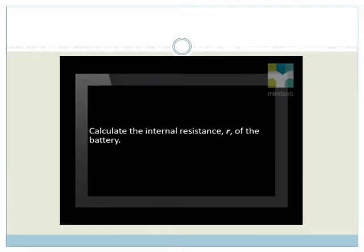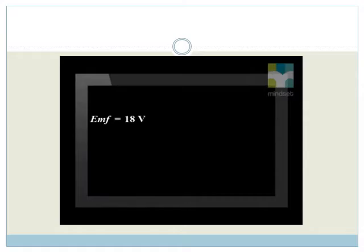Calculate the internal resistance R of the battery. From the question, we see that EMF equals 18 volts, the load external resistance equals 4 ohms, current equals 4 amperes, and we need to find the internal resistance R.